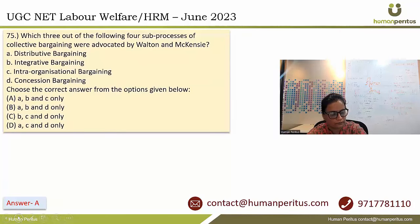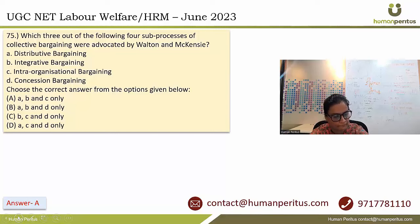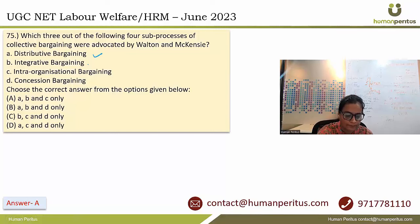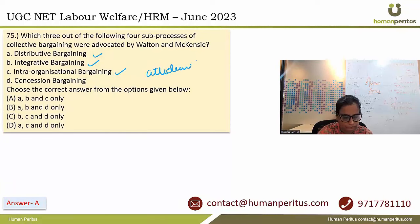Which three out of the following four sub-processes of collective bargaining were advocated by Walton and McKinsey? The four sub-processes advocated were: distributive bargaining, integrative bargaining, intra-organizational, and attitudinal. Concessional bargaining is not one of them. Answer is option A.